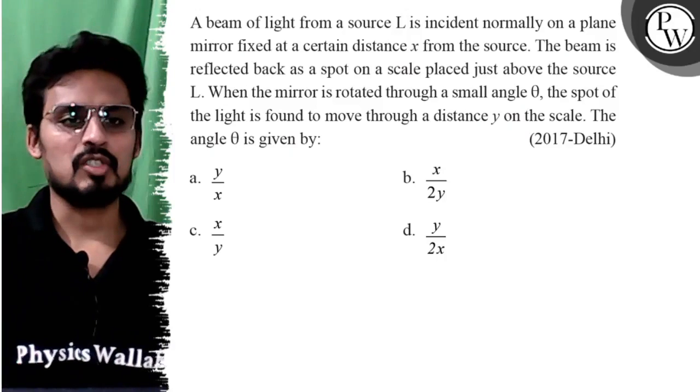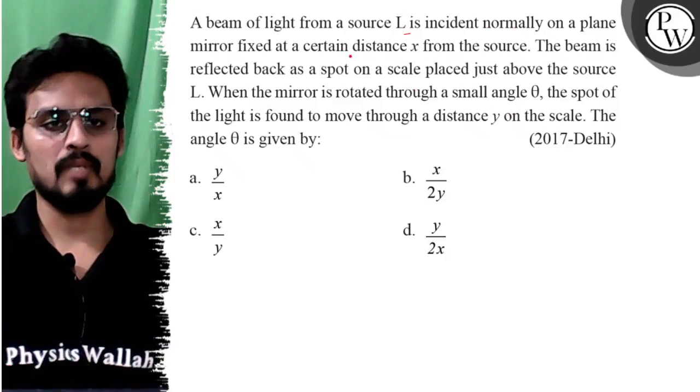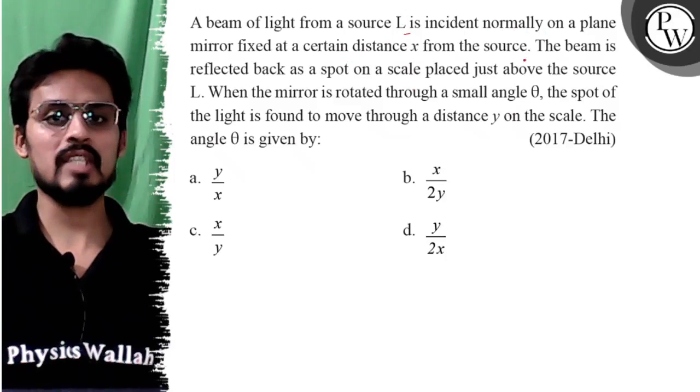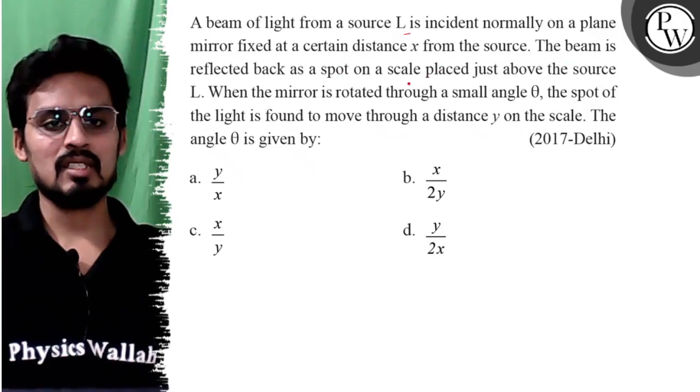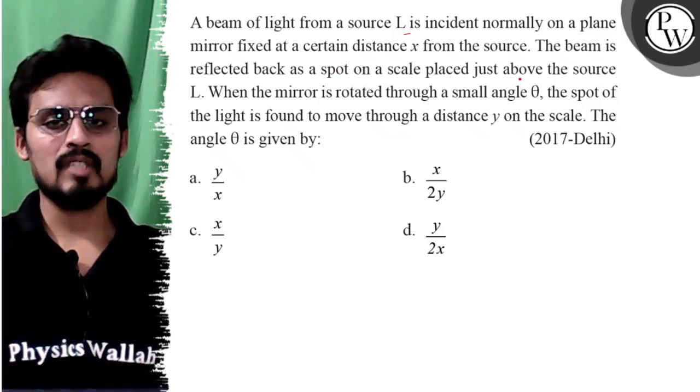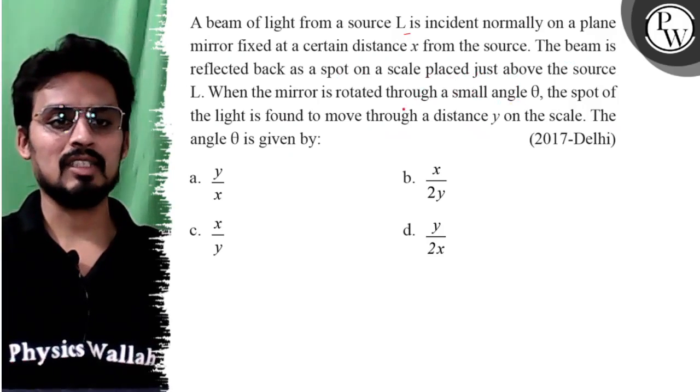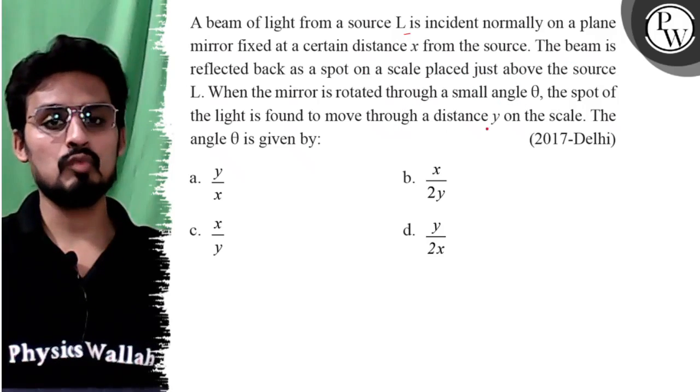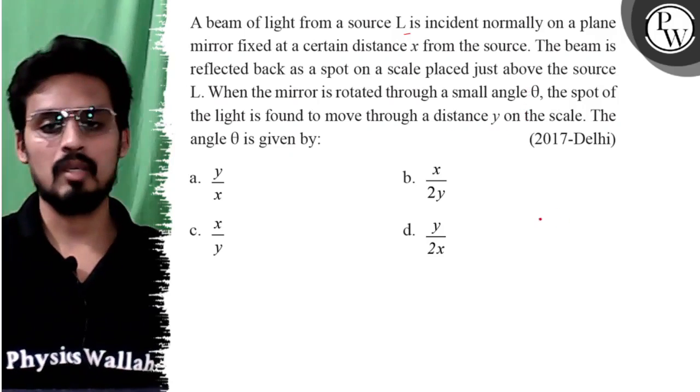Hello, let's see this question. A beam of light from a source L is incident normally on a plane mirror fixed at a certain distance X from the source. The beam is reflected back as a spot on the scale placed just above the source L. When the mirror is rotated through an angle theta, the spot of light is found to move through a distance Y on the scale. The angle theta is given by...